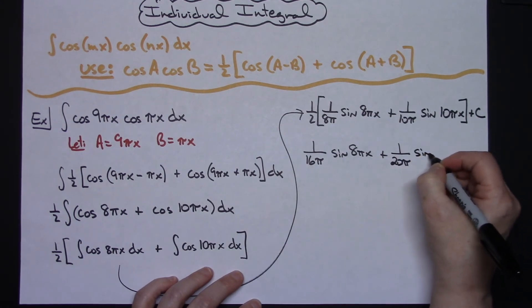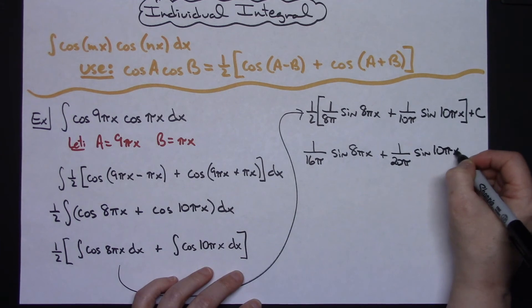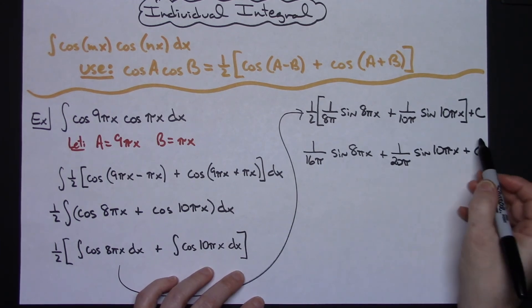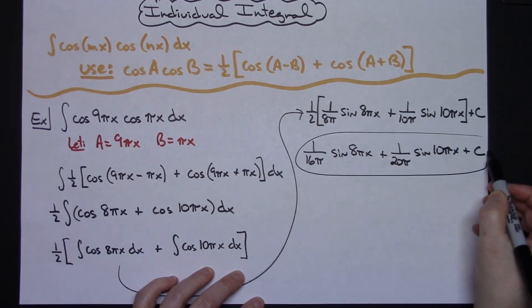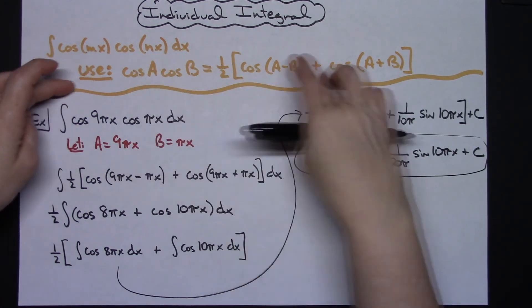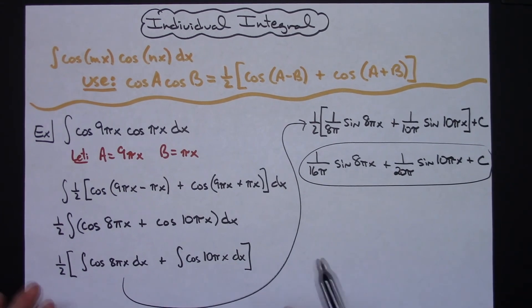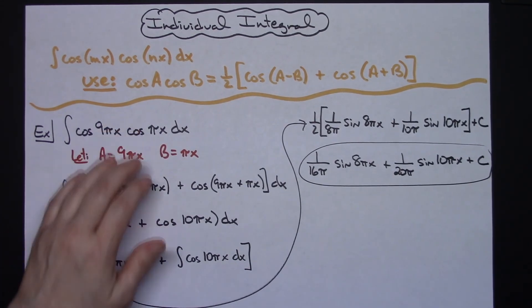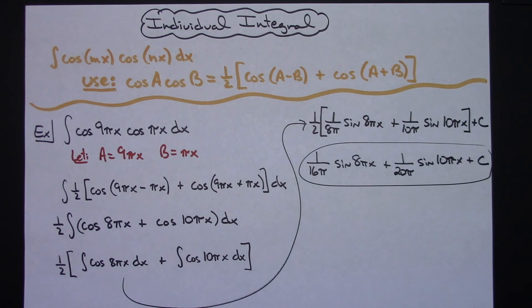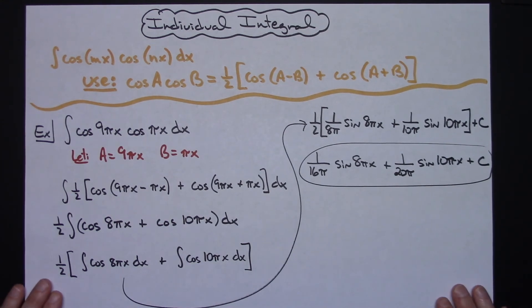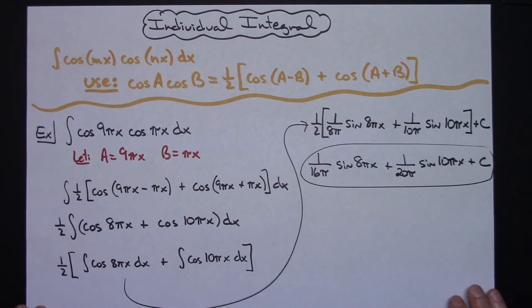After making that initial trig substitution right there at the very beginning, this becomes a very simple integral. Basically the trick is knowing how to make that substitution, or which substitution you're supposed to make in order to make the integral basically a U substitution integral. Thanks for watching. If the videos are helping, don't forget to share with your friends so they can benefit too, and definitely subscribe to the channel if you're liking them.